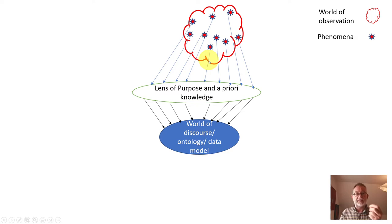So what aspects do we include? How do we distinguish between types of buildings? Do we distinguish between different types of building? Do we say here's a building? Do we say this is a public building, a private building, and whatever? So all of these things are influenced by our lens of purpose and knowledge. So that is our world of discourse or ontology or data model.